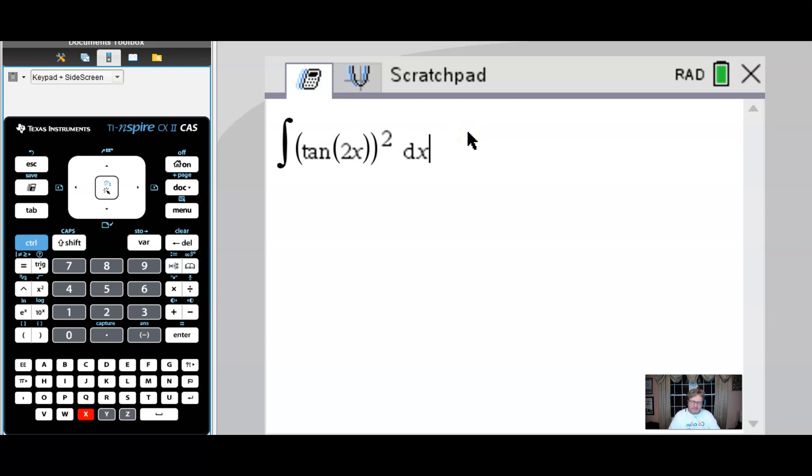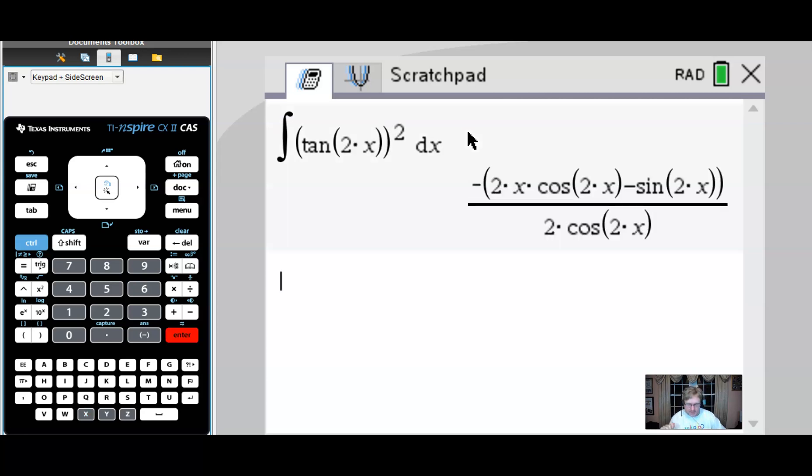And we're hoping that this is equal to the answer that you have on your paper, which I believe is one half tangent of 2x minus x. So we hit enter and we think, what in the world just happened? We have something that doesn't look anything like the answer that we have on pencil and paper. But fear not, there still is hope. One thing that I've mentioned to you before, if you're one of my students, is to go ahead and test the identity relationship of the calculator answer versus your pencil and paper answer.